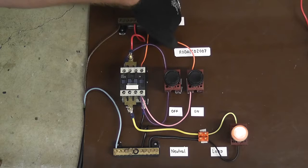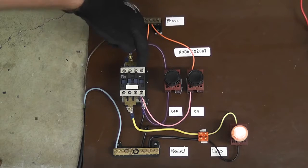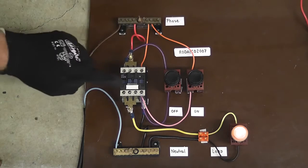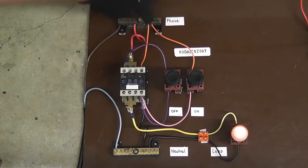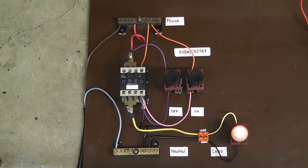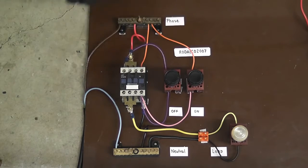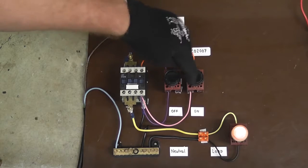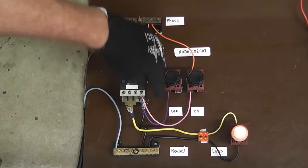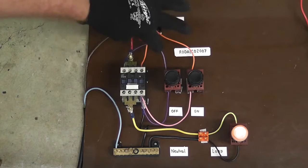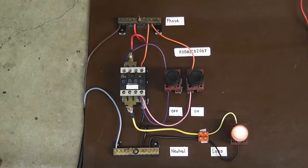The control wire goes on terminal 4, that's a spare normally open terminal, goes through the on button and the on button gets a supply from the phase so it's a latching contact so it's energized and it will latch itself. Push this, it energizes, goes through the jumper. This is the off button, goes through the jumper and drives the coil.